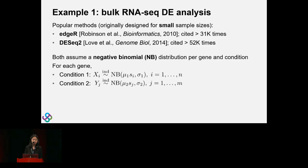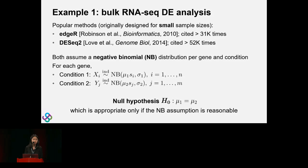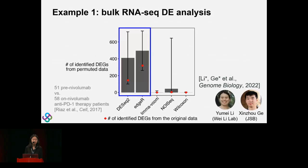Under this model, the null hypothesis is that mu₁ equals mu₂. Both methods assume the negative binomial distribution at their core. This null hypothesis is only appropriate if the negative binomial assumption is reasonable. In a collaboration project with Dr. Willy's lab at UC Irvine, we analyzed a large patient dataset from a Cell paper studying 51 patients pre-treatment and 58 patients on treatment in an immunotherapy study. Running DESeq2 and edgeR on this dataset to compare the two groups, we got differing numbers of DE genes with limited overlap.